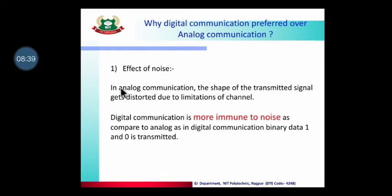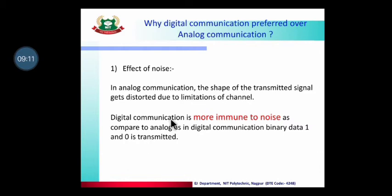The effect of noise: in analog communication, the signal is in sine wave form, and when noise is added, the shape of the signal changes. But in digital communication, the original information is in ones and zeros — in digital data form. Therefore the effect of noise is less compared to an analog signal, and we can maintain the strength of the original signal. Digital communication systems are more immune to noise.